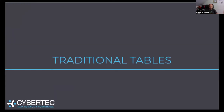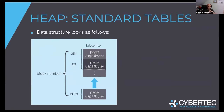So, traditional tables. As we're talking about a relational database, a table is quite an important thing. We have to understand how it works internally and what it means for certain workloads. The most important thing is that in Postgres, everything is stored in 8-kilobyte blocks. You can change the block size for various reasons, but in general, the basic notion is that everything is stored in an 8K block.